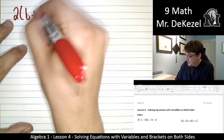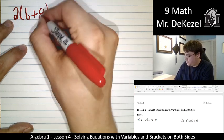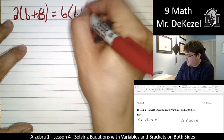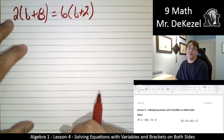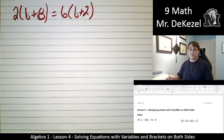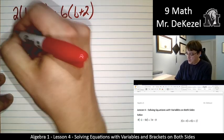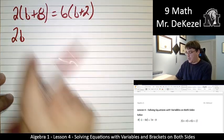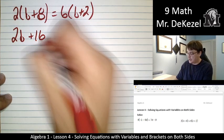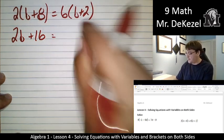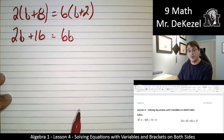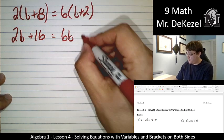Okay, let's go to the next one. 2 times b plus 8 is equal to 6 times b plus 2. I'm going to use the distributive property on both sides of the equation all at once, all in one step. So 2 times b is 2b, and 2 times 8 is 16. On the other side, 6 times b is 6b, and 6 times 2 is 12.